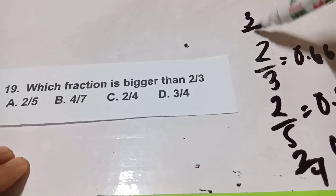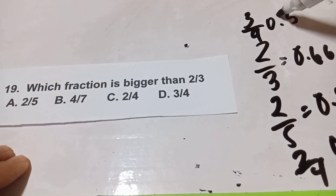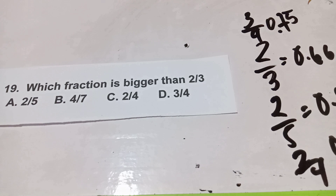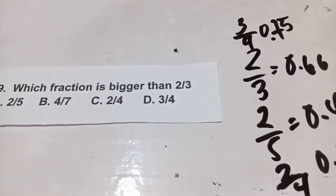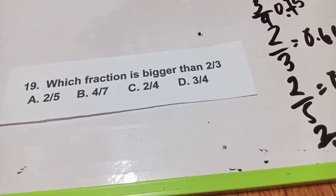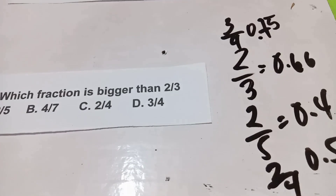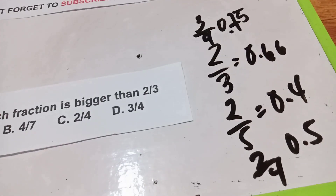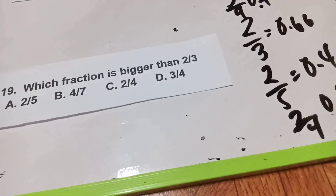And 3/4 is 0.75. So comparing all the decimal values, which fraction is bigger than 2/3 (which is 0.66)? The answer is 3/4, since 0.75 is greater than 0.66.